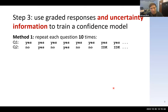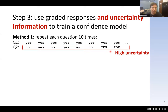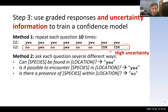We tried to implement every type of uncertainty information collection method we could think of. The most obvious is that LLMs are not deterministic — each time you ask a question, you might get a different response. If we ask ChatGPT the same question 10 times and it responds the same way every time, we interpret that as low uncertainty. If it changes its answer frequently or says 'I don't know' a lot, that's high uncertainty. A second method: language models are sensitive to how you phrase a question. For example, 'Can species be found at location?' might yield yes, whereas 'Is there a presence of species within location?' might yield no — simply due to changed wording.